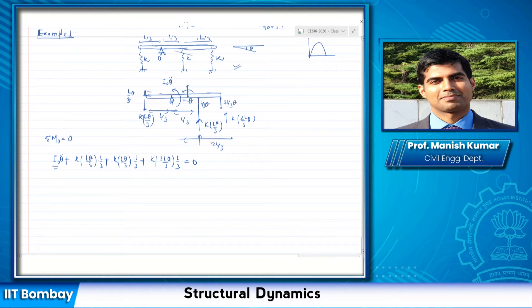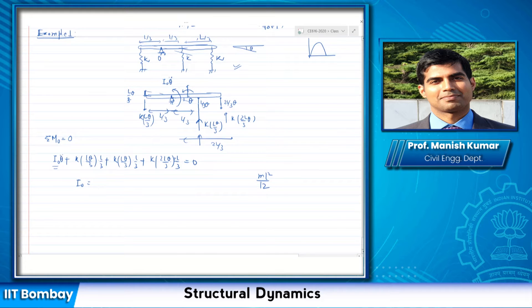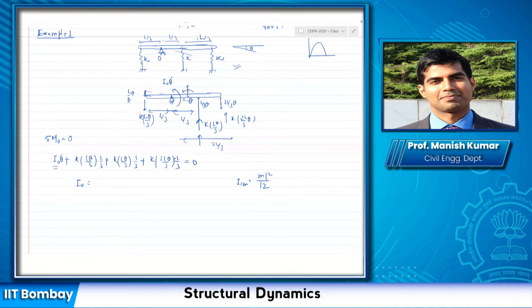All the quantities are known in this problem except the moment of inertia of this bar. The moment of inertia of a bar about its center of mass — thank you for the correction — it is ml² / 12, where the center of mass is at the midpoint of the bar.